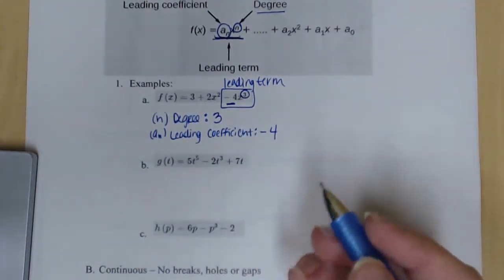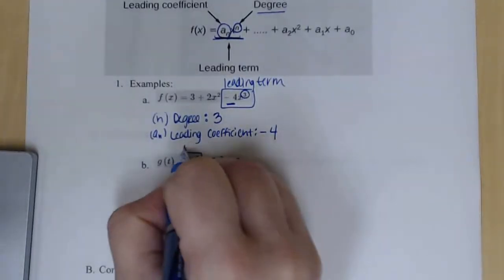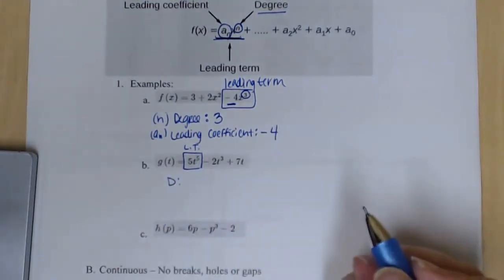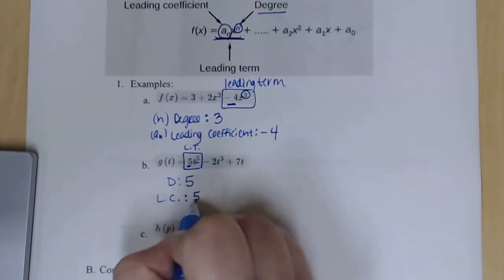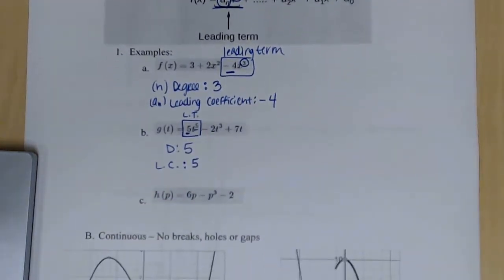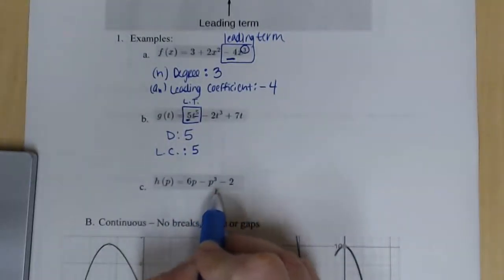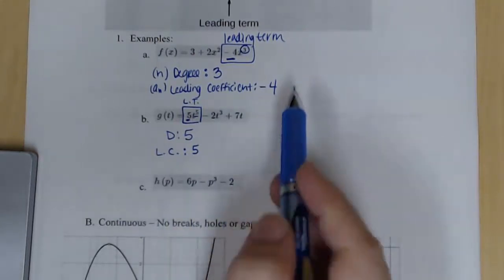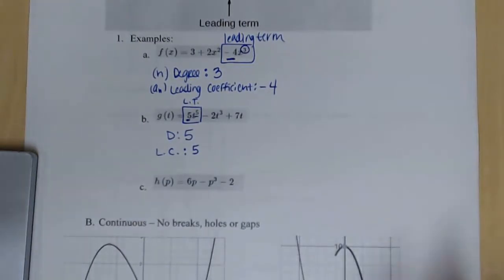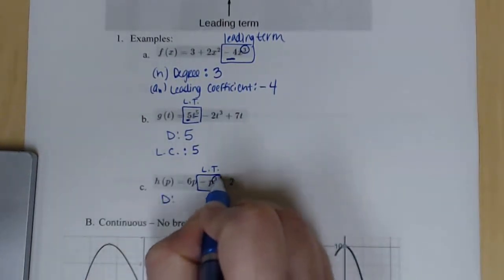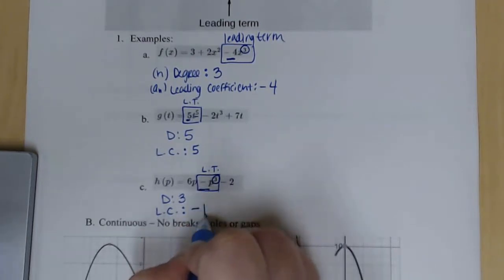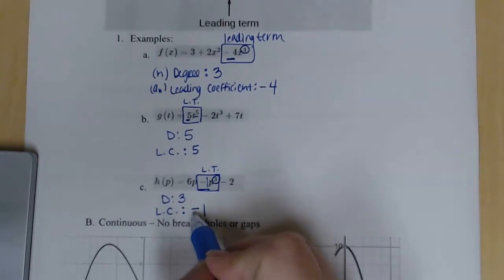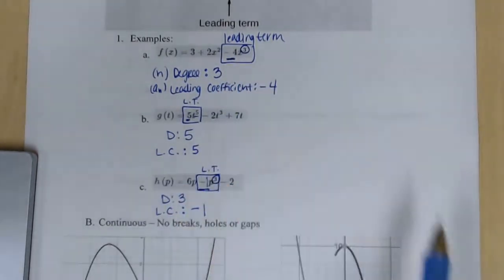For the next function, look throughout the entire thing for the highest exponent. It was in the back in the first example and at the front in the second — you're not guaranteed to have it in any particular place. The leading term gives a degree of 3 and a leading coefficient of negative 1. If there's no number, there's an assumed 1, so it's negative 1, not just negative.